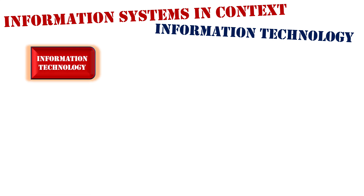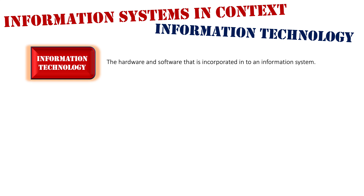By classification, information technology has two different areas: it is the hardware and the software that is incorporated into an information system. We're going to discuss those two different components and how they are defined in relation to the information system.